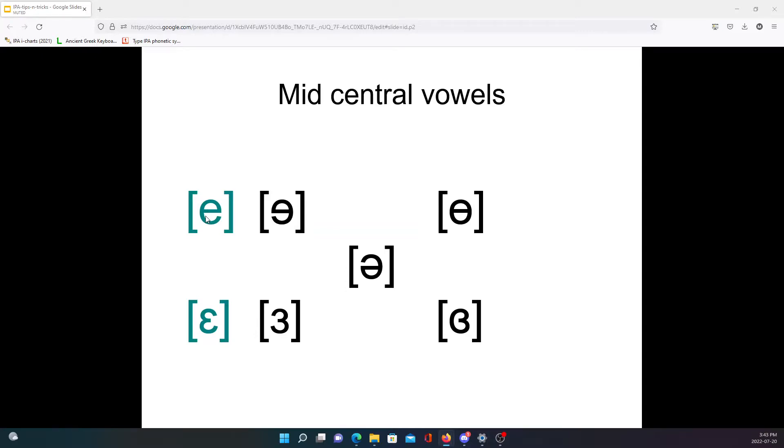Now, the lowercase e is a close mid front unrounded vowel. Its central counterpart is just reversed—see, these are a mirror of each other. The reversed lowercase e represents a close mid central unrounded vowel. Epsilon is an open mid front unrounded vowel, and reversed epsilon is an open mid central unrounded vowel.